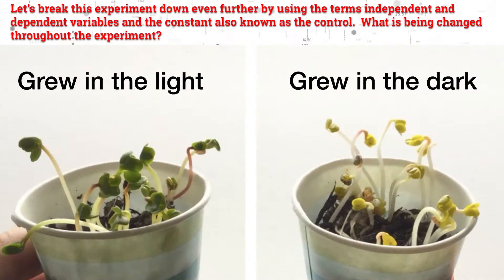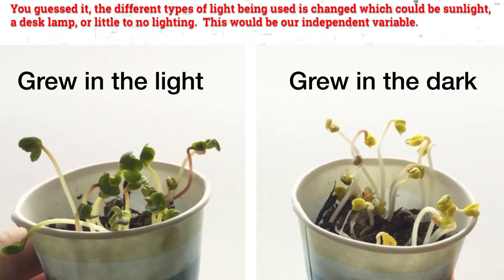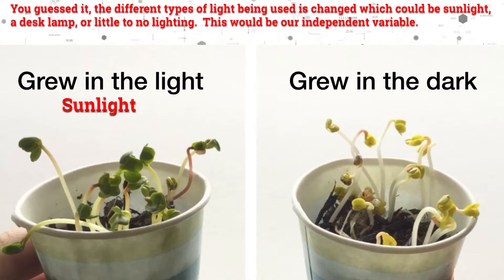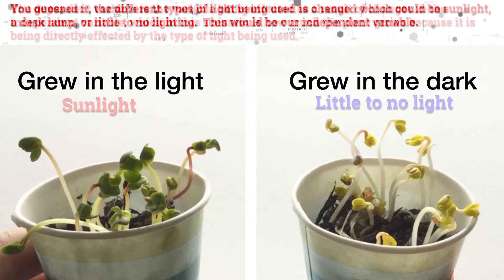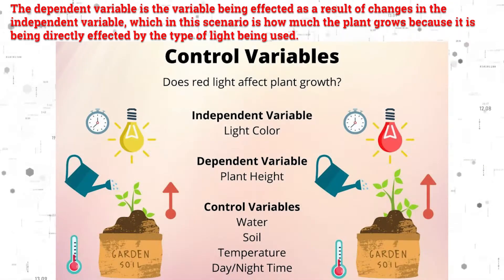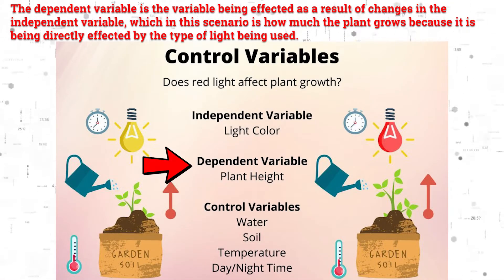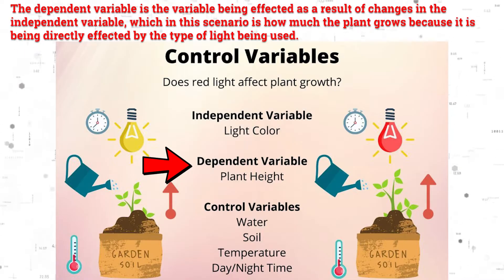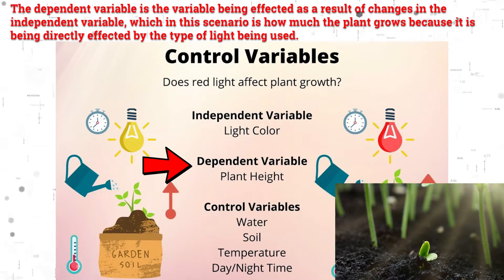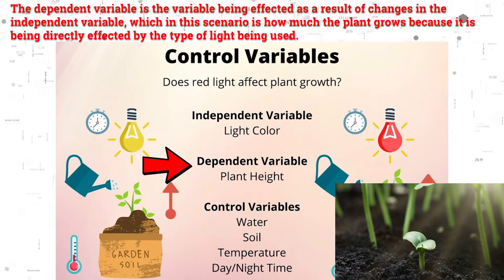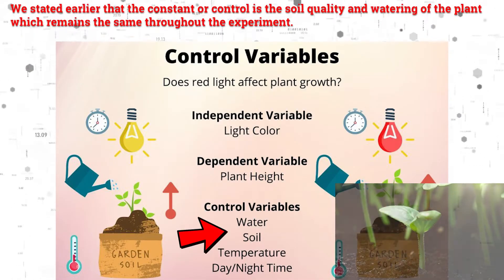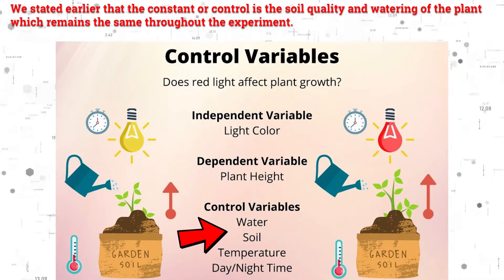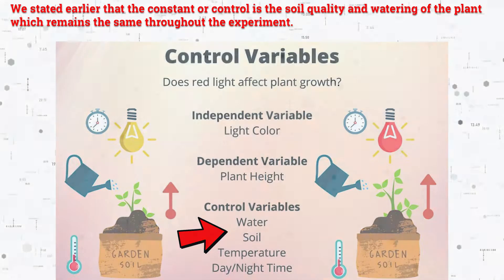What is being changed throughout the experiment? The different types of light being used — which could be sunlight, a dense lamp, or little to no light — is changed. This will be our independent variable. The dependent variable is how much the plant grows, because it is directly affected by the type of light being used. The constant or control is the soil quality and watering of the plant, which remains the same throughout the experiment.